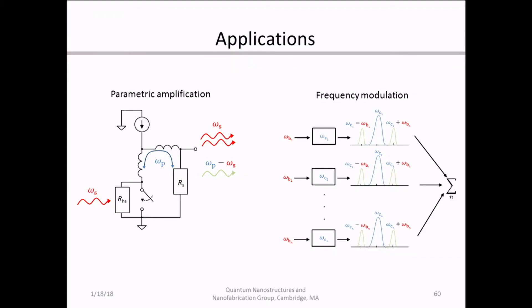Looking ahead to how this can be applied in future nanowire-based devices: the first application is some type of parametric amplification, where the nanowire acts as a pump, a signal frequency is sent in, that signal is amplified, and a mixing product is obtained — similar to what has been explored in inductively shunted Josephson junctions. Alternatively, the nanowire could be used for frequency modulation, acting as a carrier where information about an input signal is carried as mixing product sidebands on that frequency.